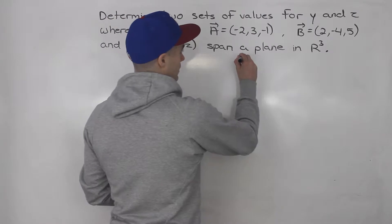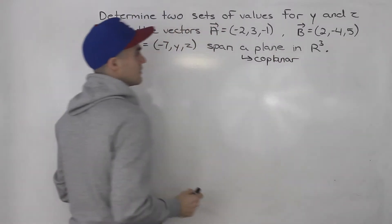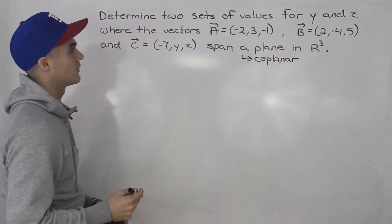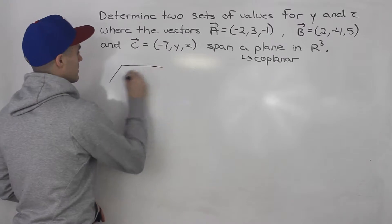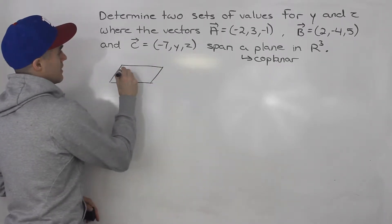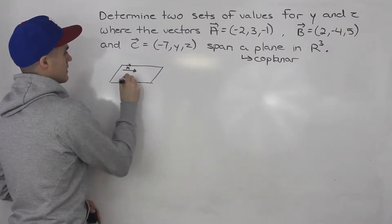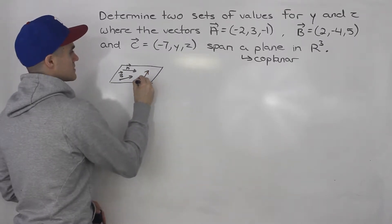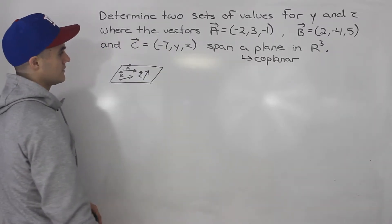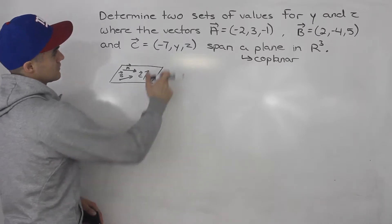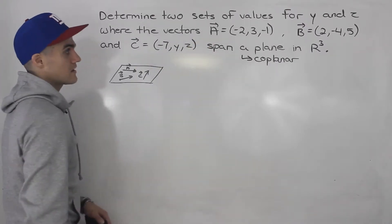Span a plane in R3 also means that these vectors are coplanar. It's just another way this question could have been worded, or it could have also said that these vectors lie on the same plane. So visually, what's happening is we have a plane, and these vectors — vector a, vector b, and vector c — all three are lying on the same plane, and we've got to find two sets of values for y and z that makes that so, where vector c is going to be on the same plane that a and b is on.